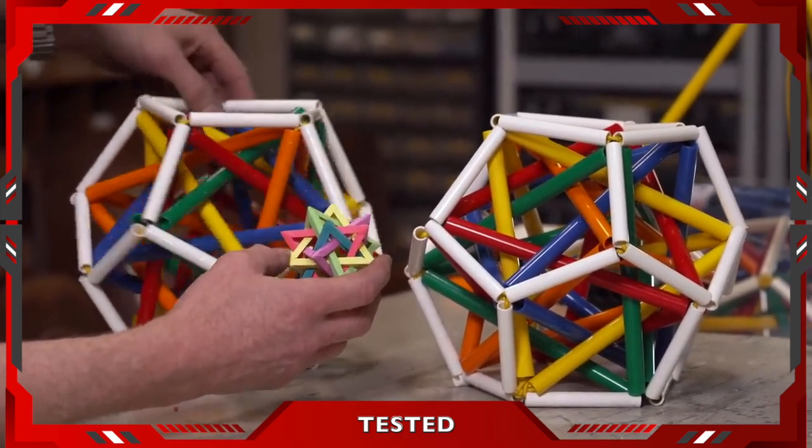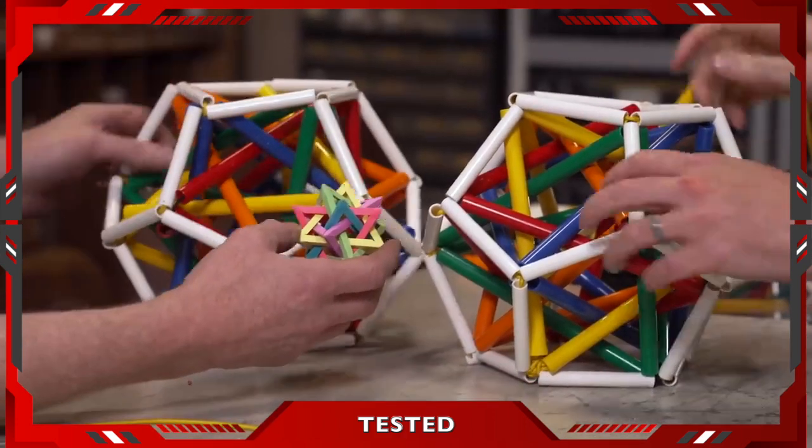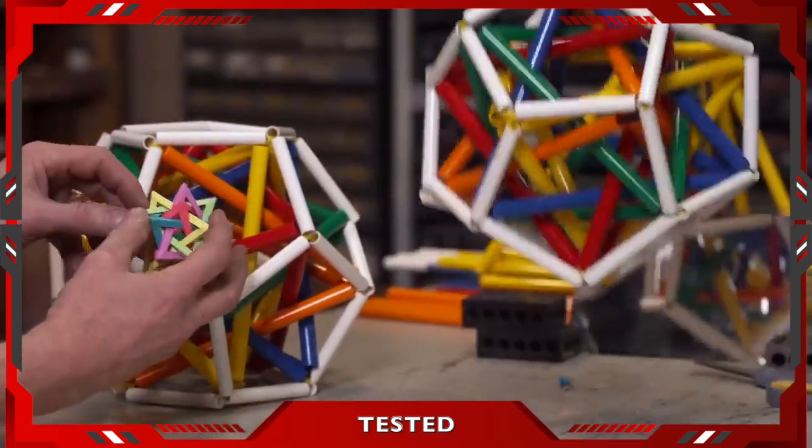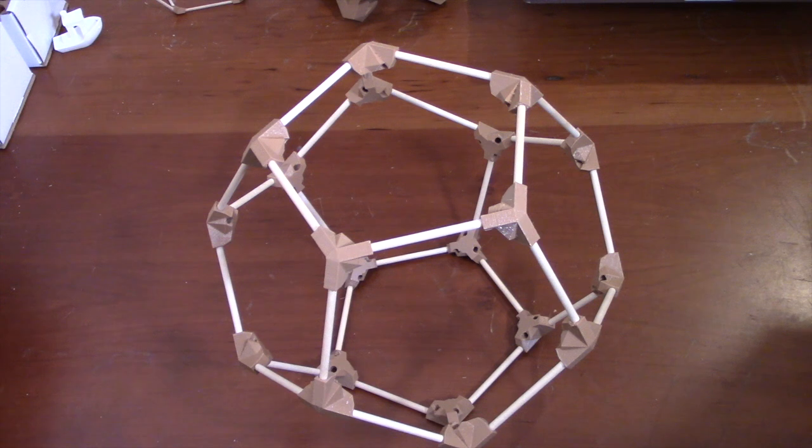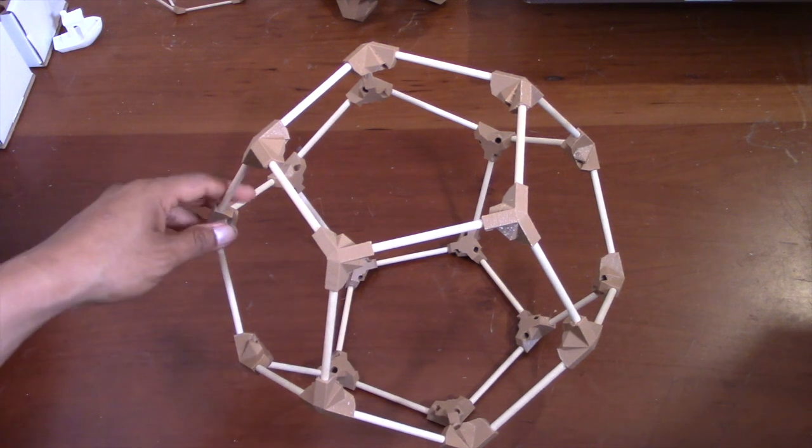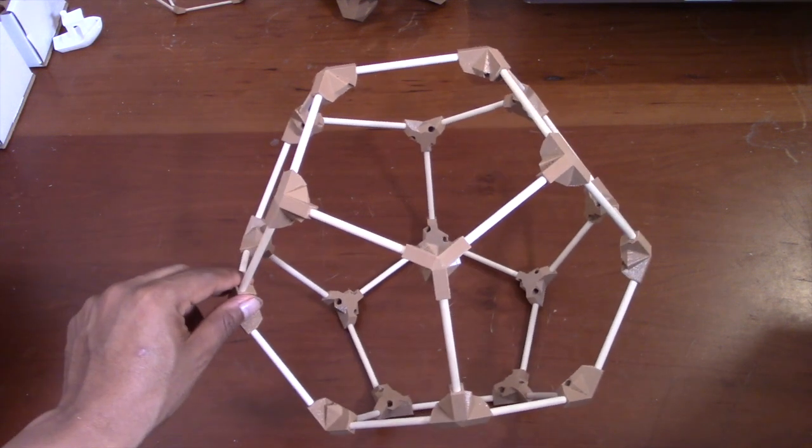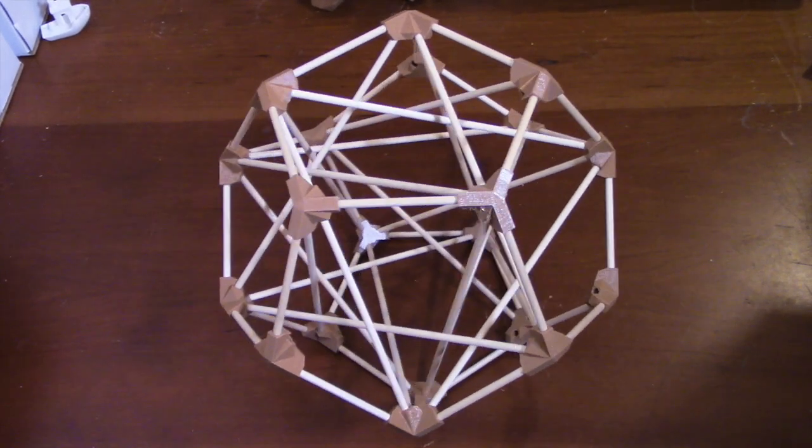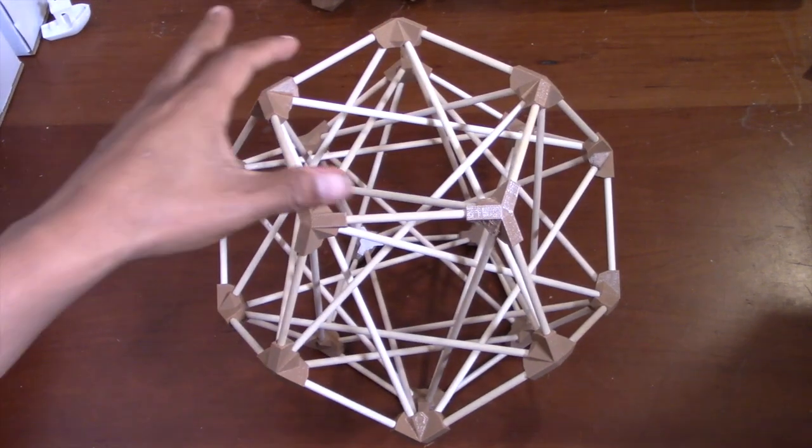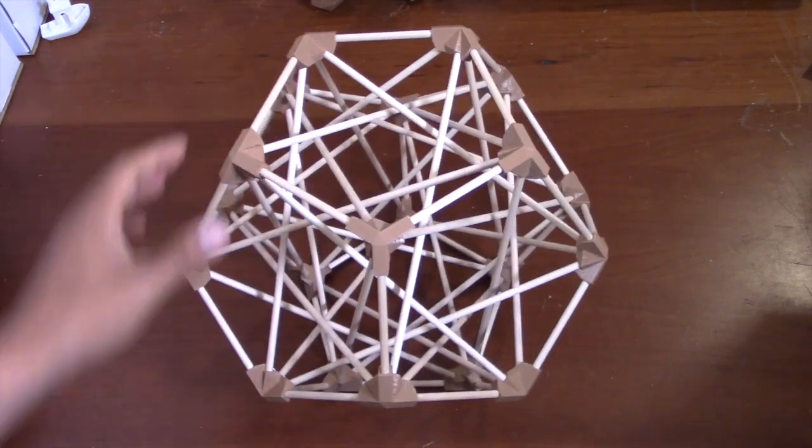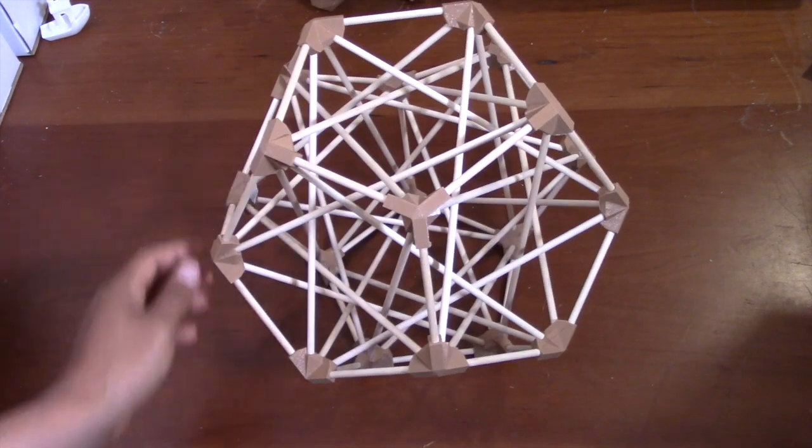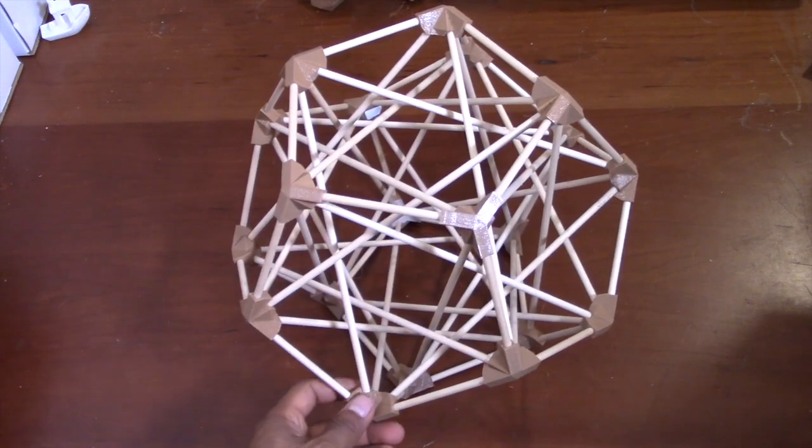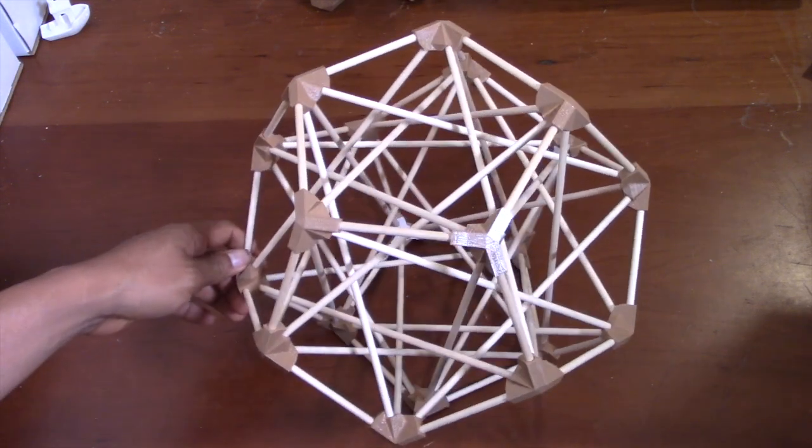The method Matt and Adam used is they first created the five intersecting tetrahedra, which enabled them to create the dodecahedron. What if I reverse that? First, I'm going to create the dodecahedron and use its vertices to help me create the five intersecting tetrahedra. So in order to create this, I 3D printed 20 vertices. The dodecahedron consists of 30 edges and the intersecting tetrahedra also consists of 30 edges, but they're just a little bit longer.